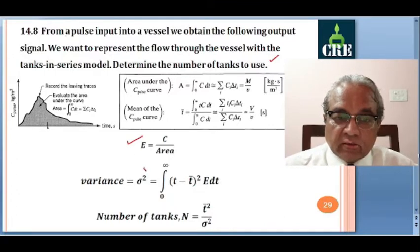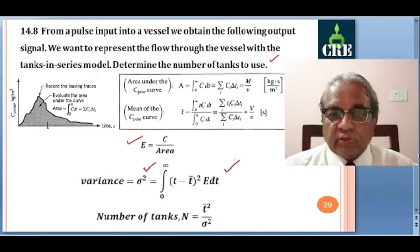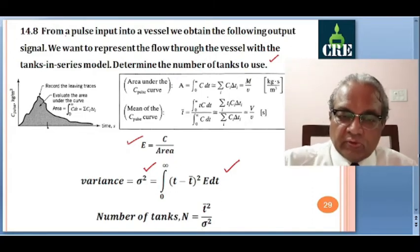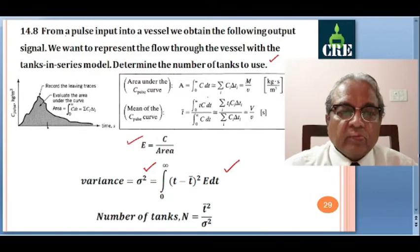The variance is σ² = ∫₀^∞ (T − T̄)² · E dt. The number of tanks N is simply T̄²/σ² — mean time squared divided by variance. Note that σ² itself is the variance; it is not variance squared.